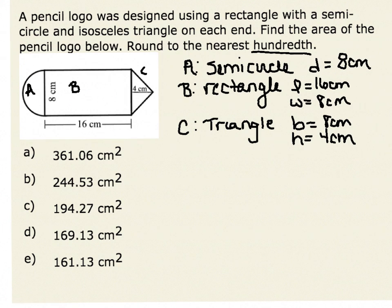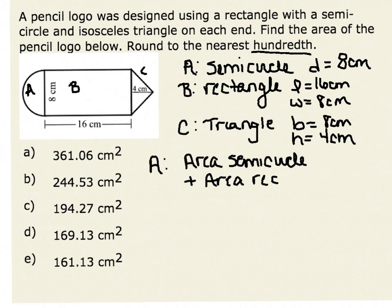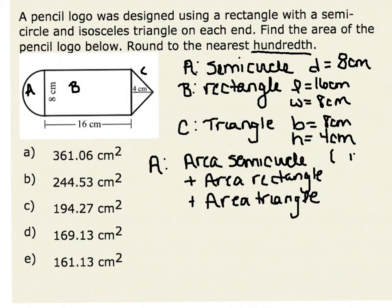In order to find the area of the entire logo, we need to find the area of shapes A, B, and C and add them together. The area of the pencil logo is given by the area of the semicircle plus the area of the rectangle plus the area of the triangle. The area of a semicircle is one half times pi times the radius squared. The area of the rectangle is length times width, and the area of the triangle is one half base times height.